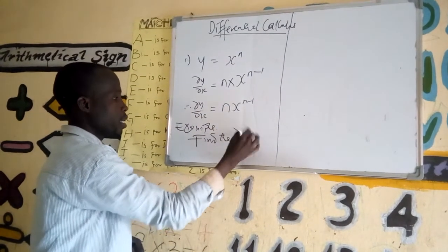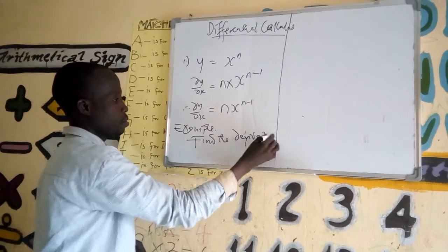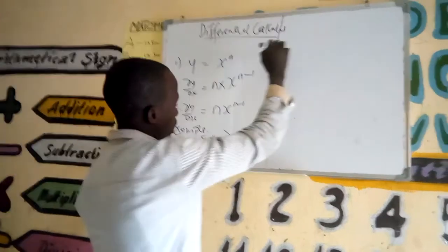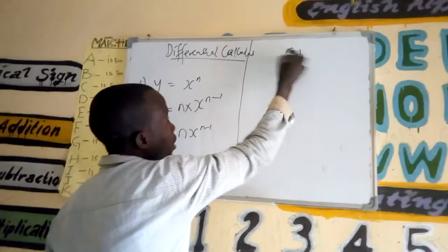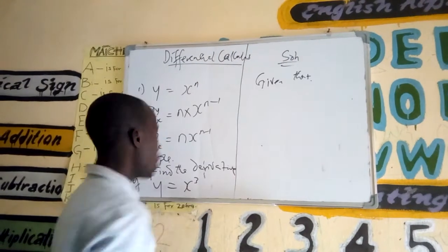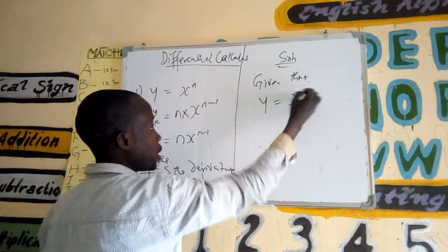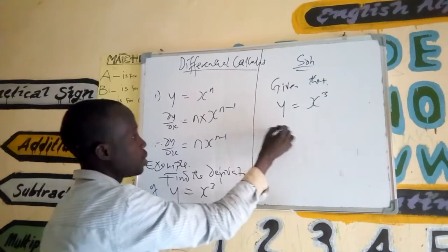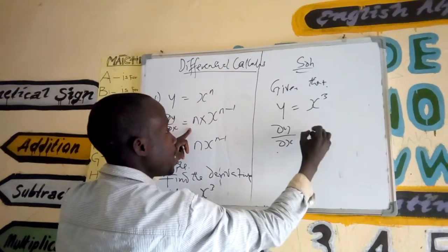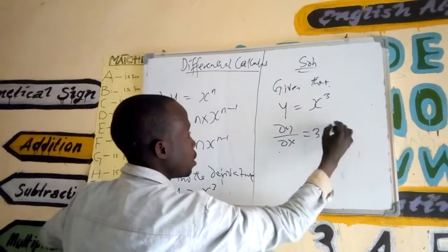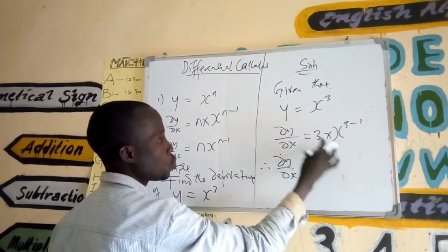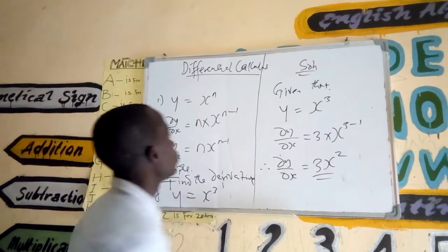For example, find the derivative of y equals x to the power 3. To find this, given that y equals x to the power 3, as you can see from the formula, dy by dx equals — the power comes down here — 3 times x, then we have 3 minus 1. Therefore dy by dx equals 3x squared.